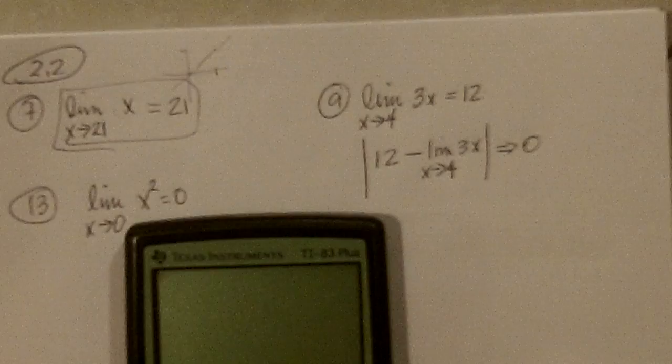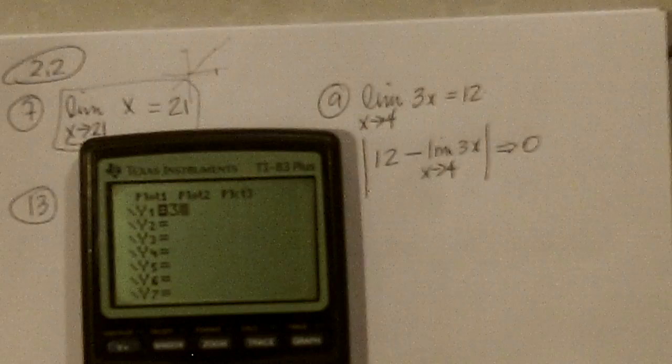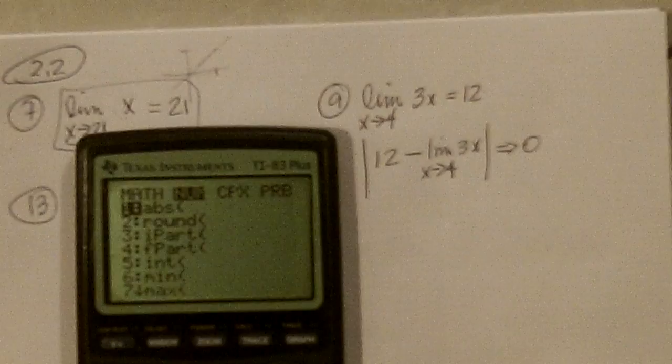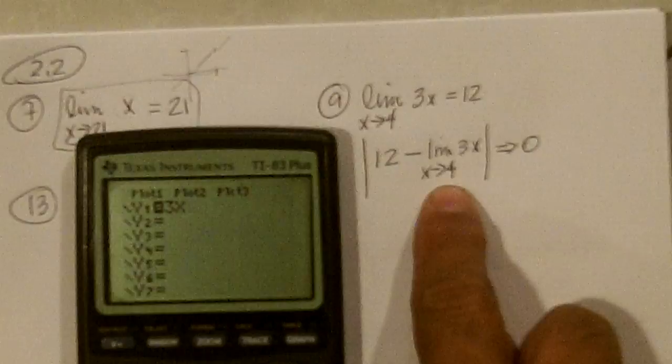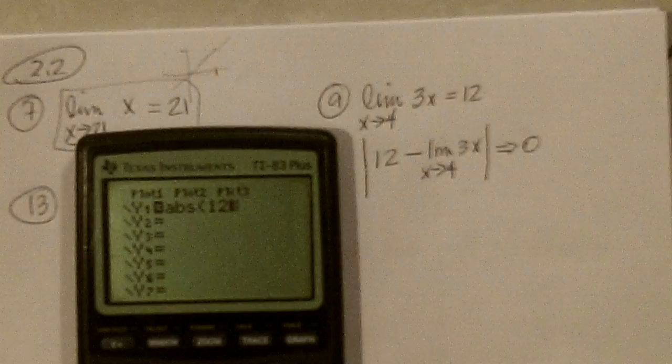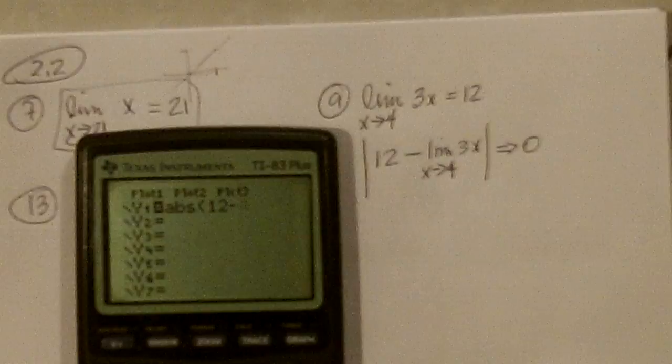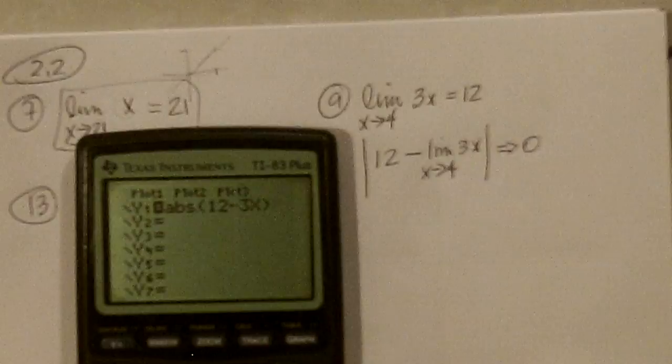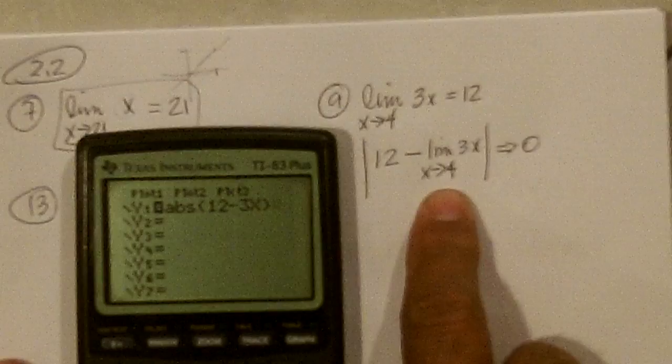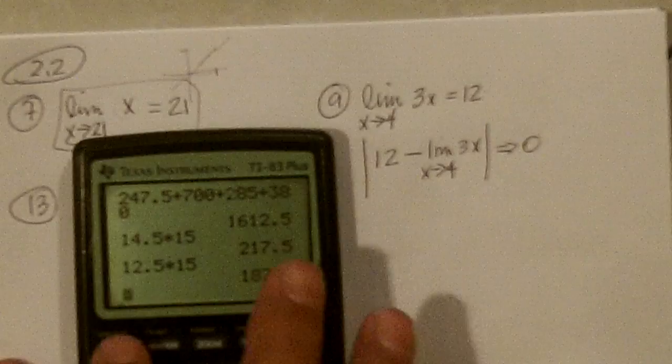So we kind of verify that with the calculator. We put in, so I'll put this function in to y1, which is 3x, and then I'll actually I'll put in this whole thing, which is math number absolute value of 12 minus 3x, close parenthesis, and then we'll pick numbers closer and closer to 4.